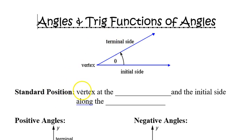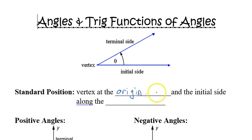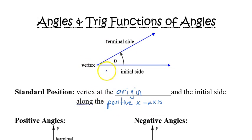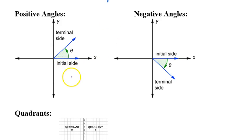The first thing we'll talk about is standard position. In standard position, the vertex of the angle is always at the origin, and the initial side is along the positive x-axis. So you set this up in the middle of an xy coordinate plane.